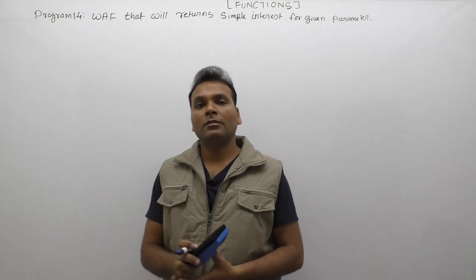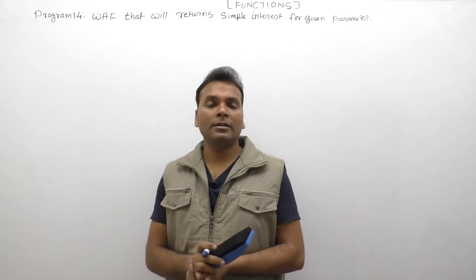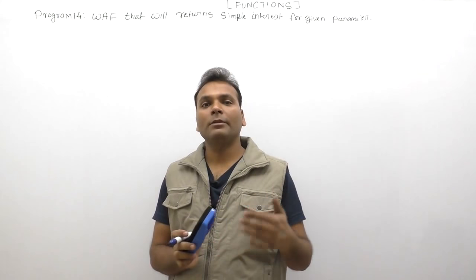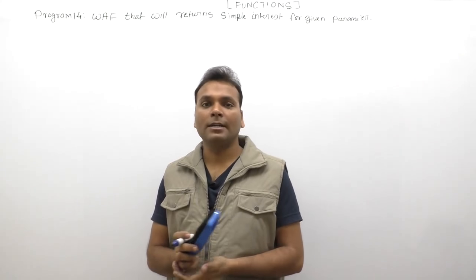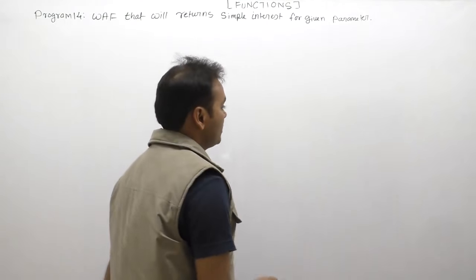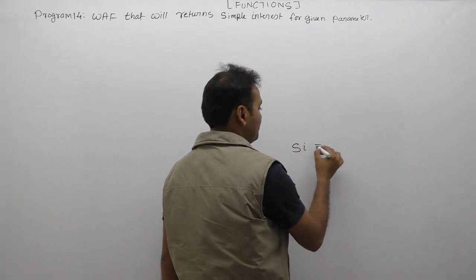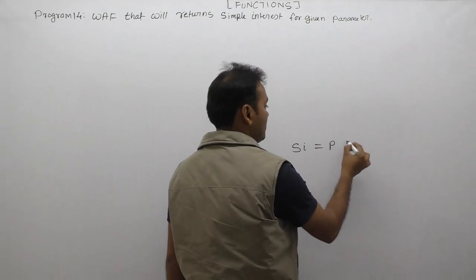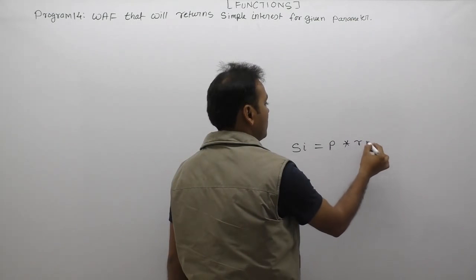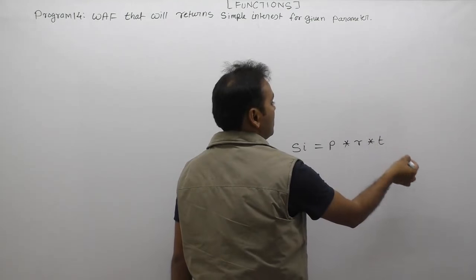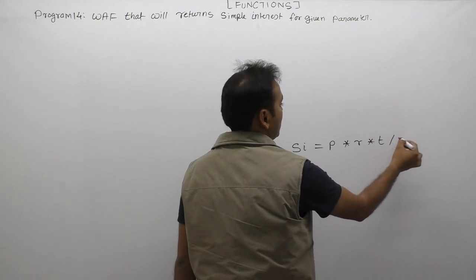Now write a C program or C functions that will return simple interest for given parameters: P, R, T. The formula of calculating simple interest is: Simple Interest is equivalent to principle multiply by rate of interest multiply by time or duration divided by 100.